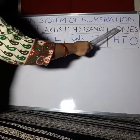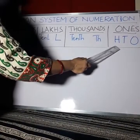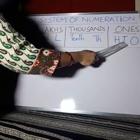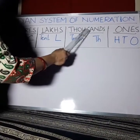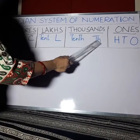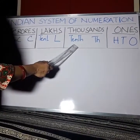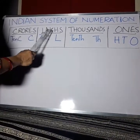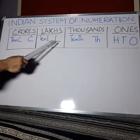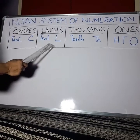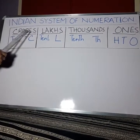In the Ones period, there are three places: Ones, Tens, and Hundreds. In the Thousands period, there are two places: Thousands and Ten-Thousands. In the Lakhs period, we have two places: Lakhs and Ten-Lakhs.